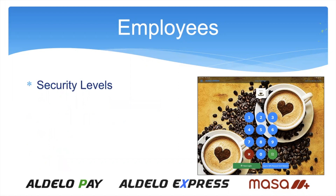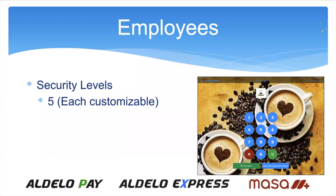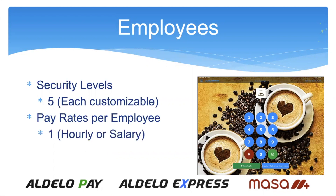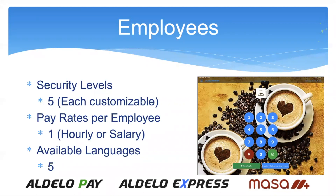As far as security levels go, there are five security levels, but each one is customizable. You can get very distinct differences between the levels of security, and there's a lot to program, but only five levels available to use. Pay rates per employee: there is one pay rate, either hourly or salary per employee. Available languages: we have five. It doesn't change the entire terminal from English to Spanish, but certain characteristics in the system do change languages, and it can be set by employee.